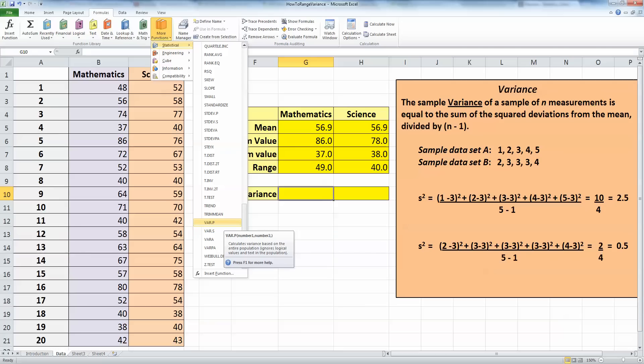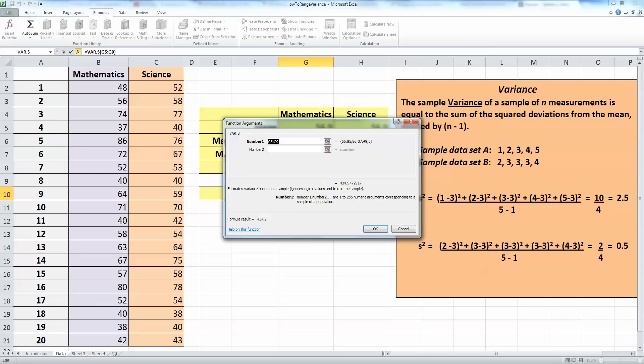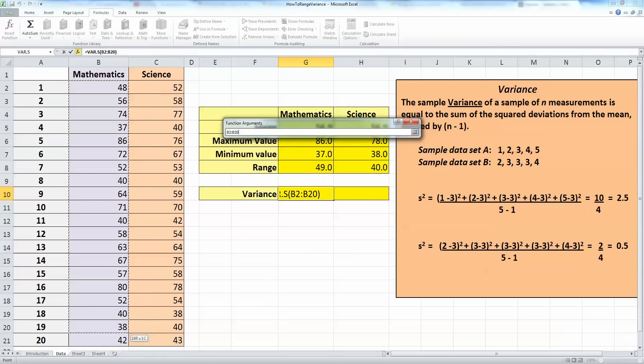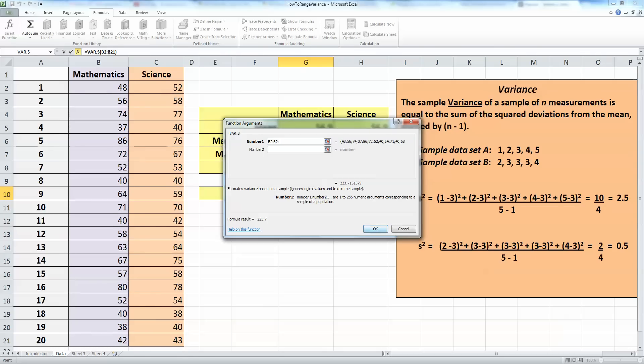Now the two you're most interested in here would be var.p and var.s. Var.p is the variance for a population, so supposing my test scores here represented all the test scores, so I would choose that one. But as these are sample test scores, I need var.s for sample, so I'm going to select that, put in all the values for the mathematics test, and click OK.